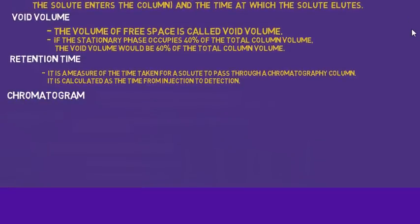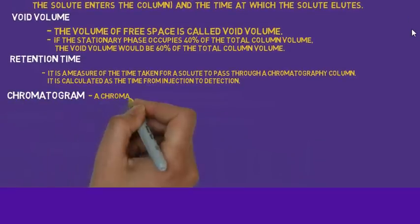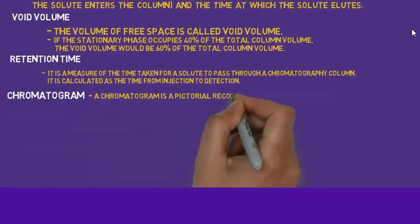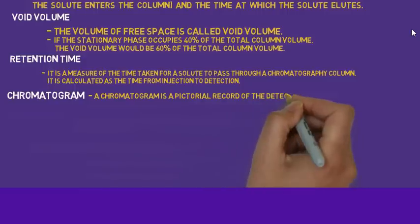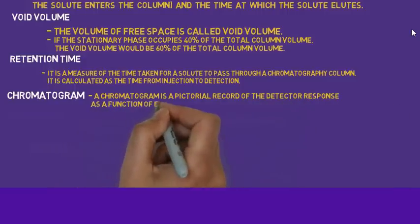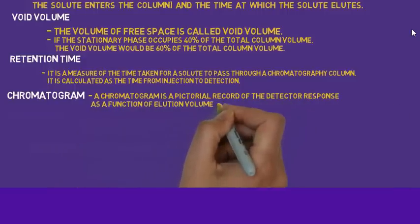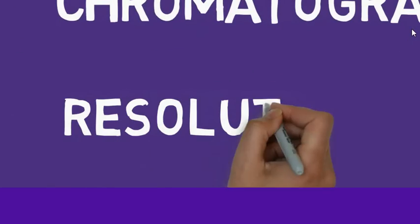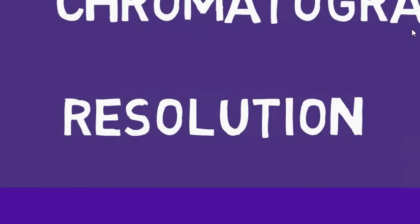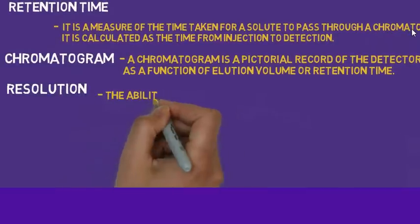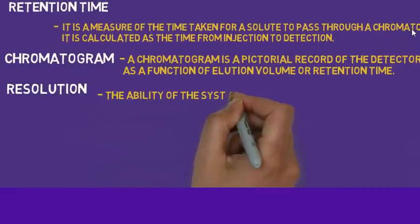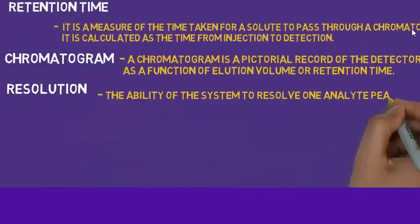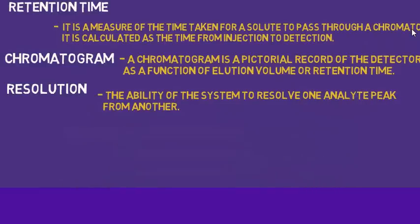A chromatogram is the picture record of the detector response as a function of retention time or elution volume. Resolution is the ability to separate two peaks from one another.